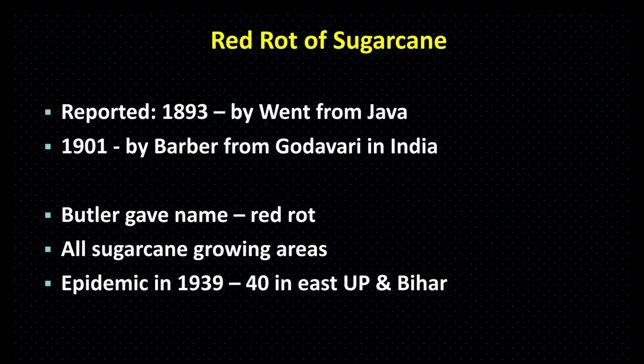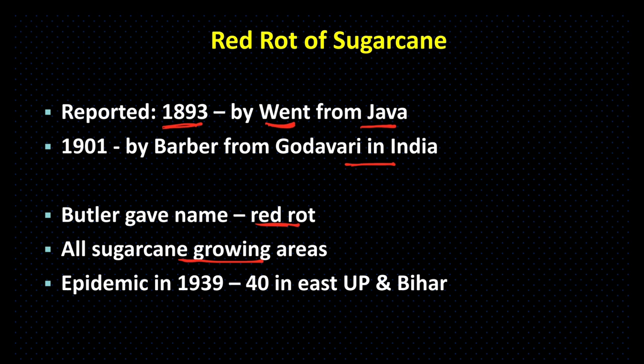Red rot of sugarcane was first reported by Wendt in Java in 1893. In 1901, Barber reported red rot from Godavari district in India. This disease is most common in all sugarcane growing areas in India. In 1939–40, an epidemic was reported in Eastern UP and Bihar.